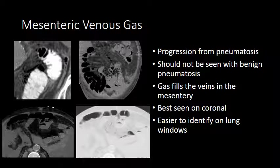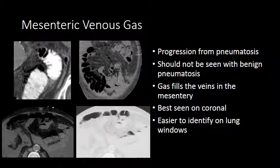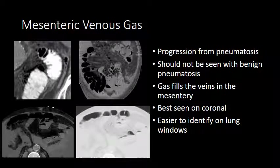Mesenteric venous gas is an important finding not to miss. It is almost always associated with severe mesenteric ischemia and is a helpful finding to differentiate benign pneumatosis within the bowel wall from pneumatosis related to ischemia. Mesenteric venous gas occurs when pneumatosis progresses from involving the bowel wall to traversing it and being carried away by the mesenteric veins into the portal venous system. It is easier to see on lung windows and on a coronal reconstruction.